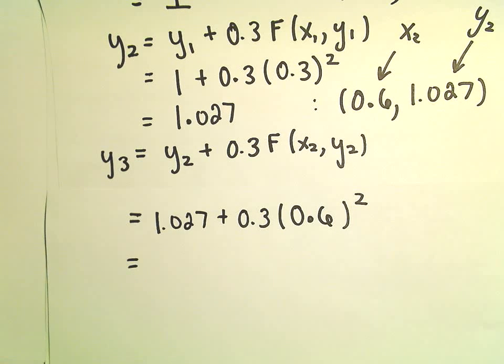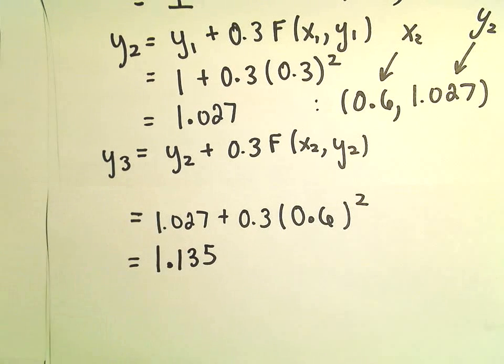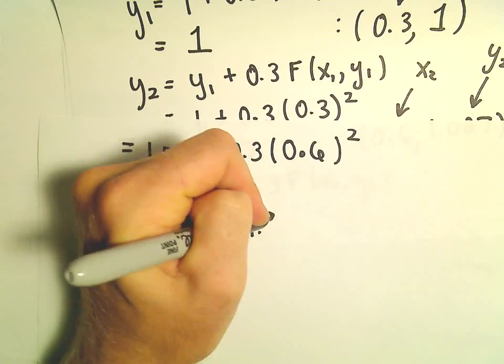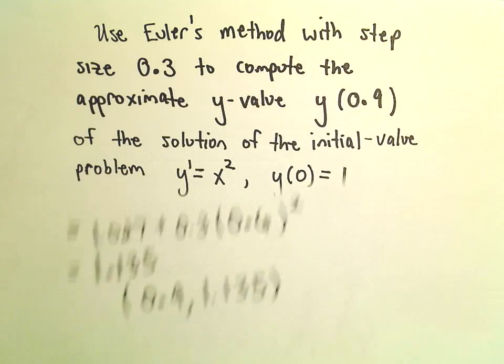So let's see. 0.6 squared, that's just 0.36. If we multiply that by 0.3, I'm getting 0.108. And then if we add 1.027, I'm getting 1.135. So we've now done this a couple times. So it says at the point 0.9, our approximate y value would be 1.135. And that's all there is to it.